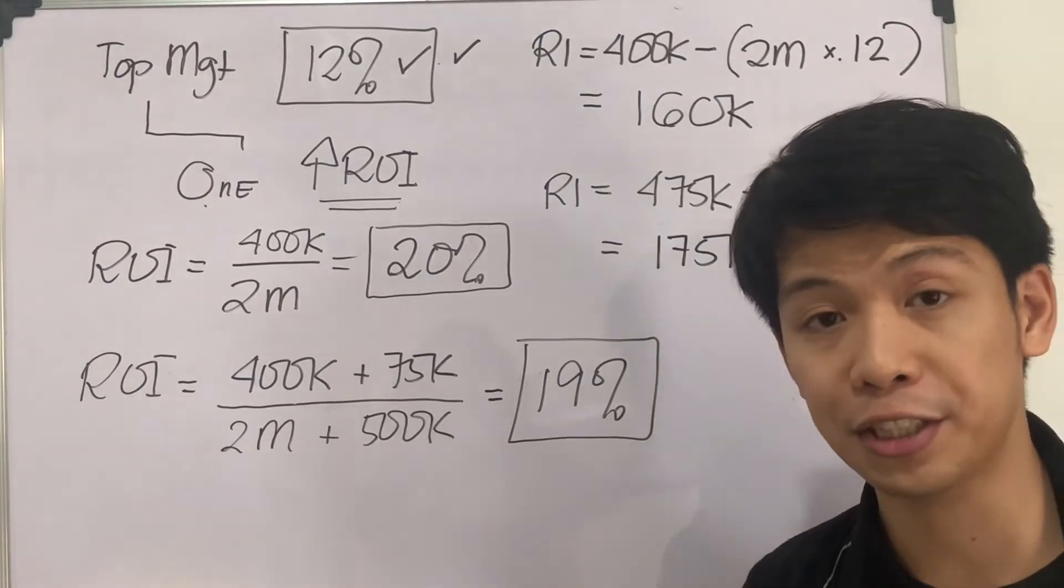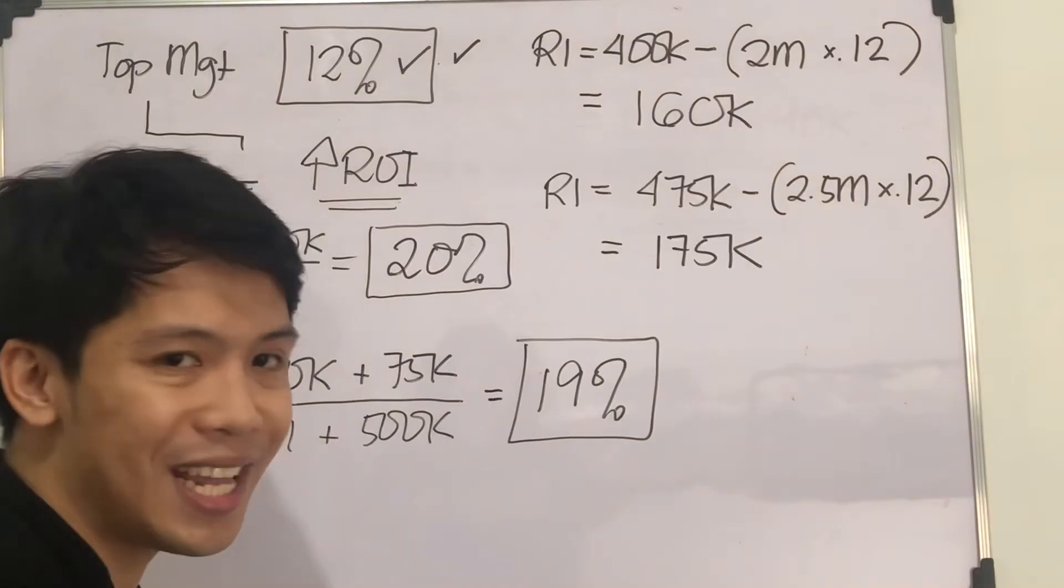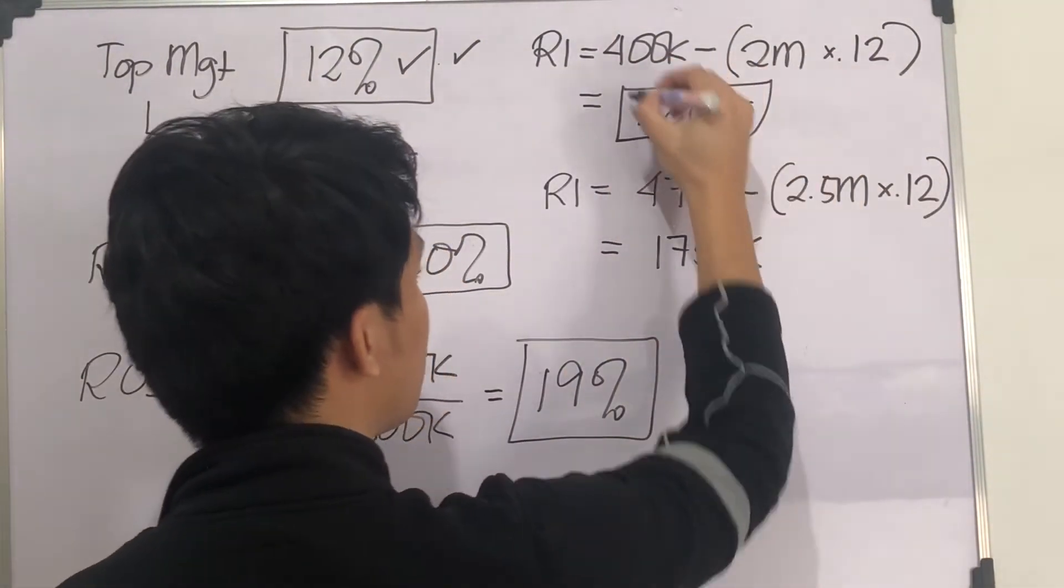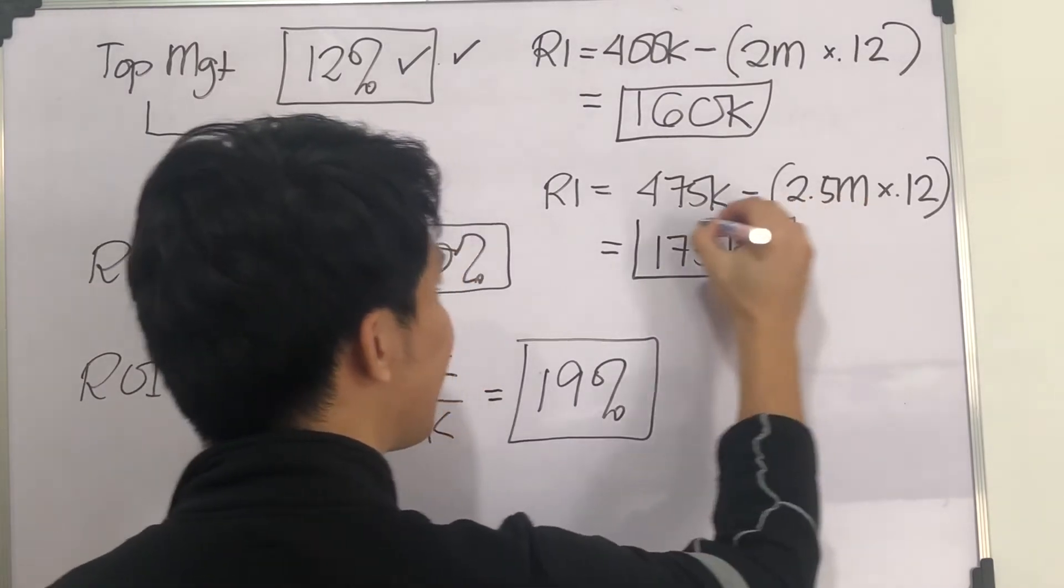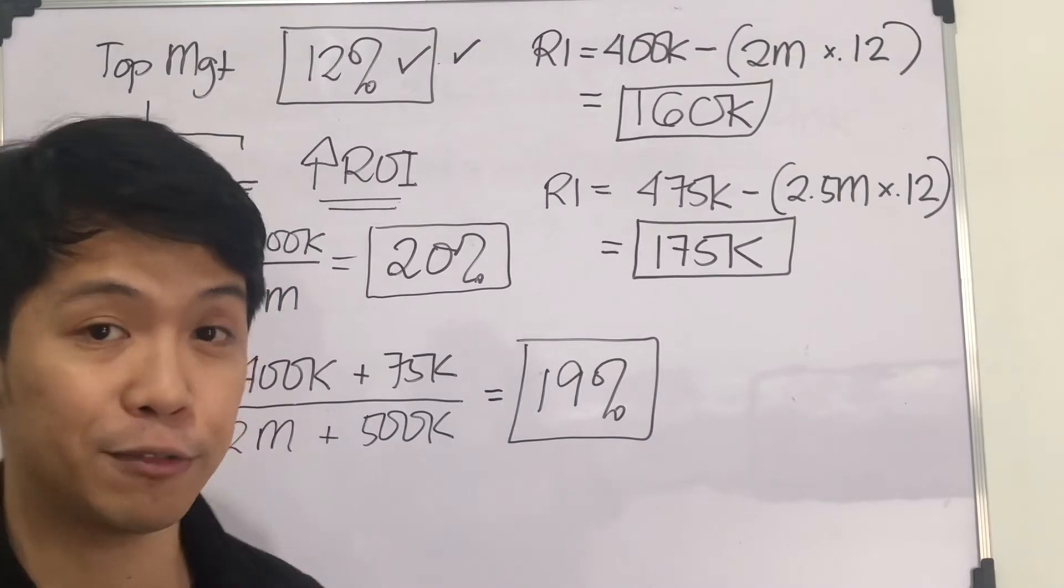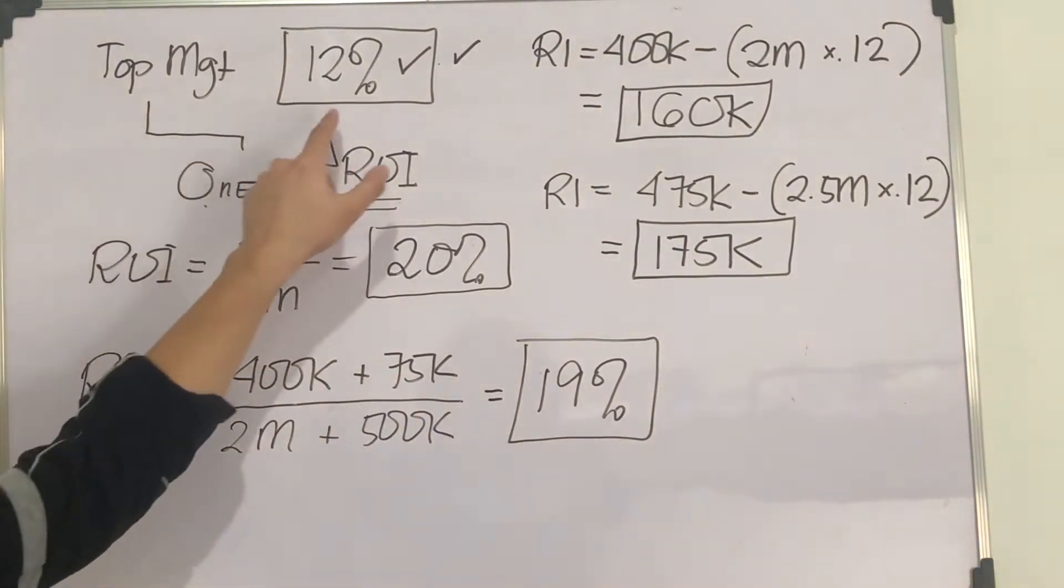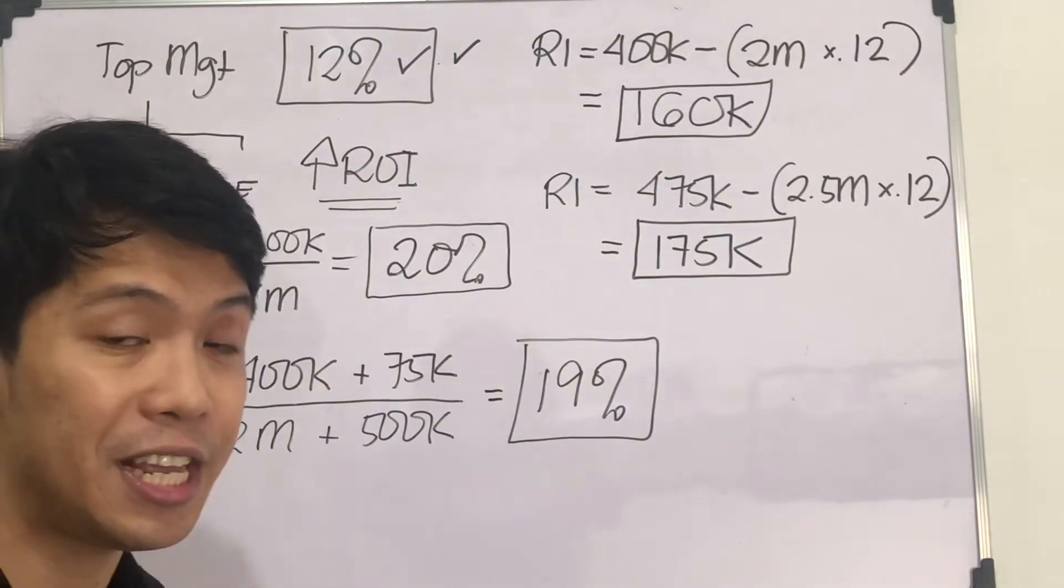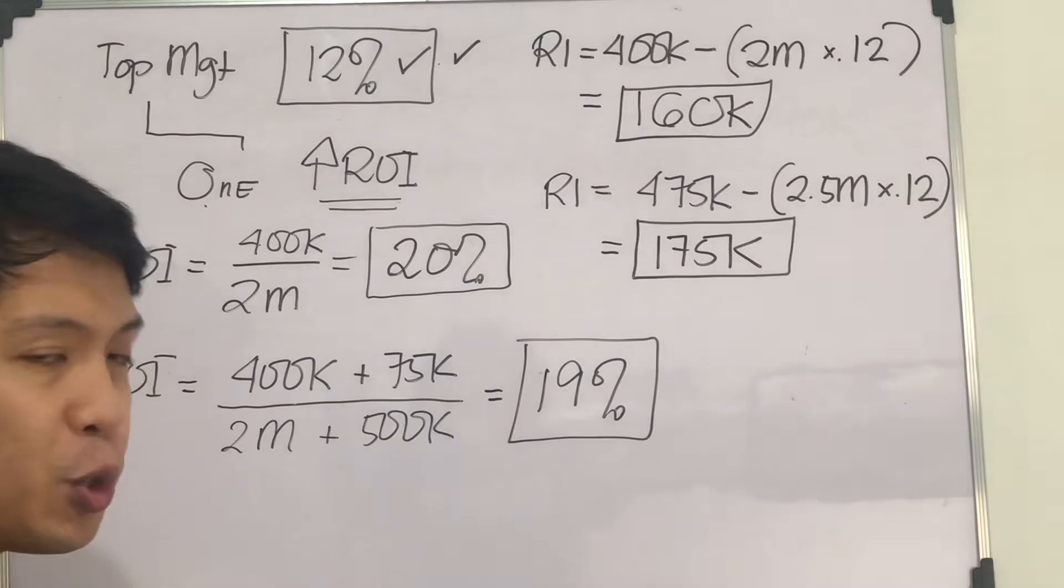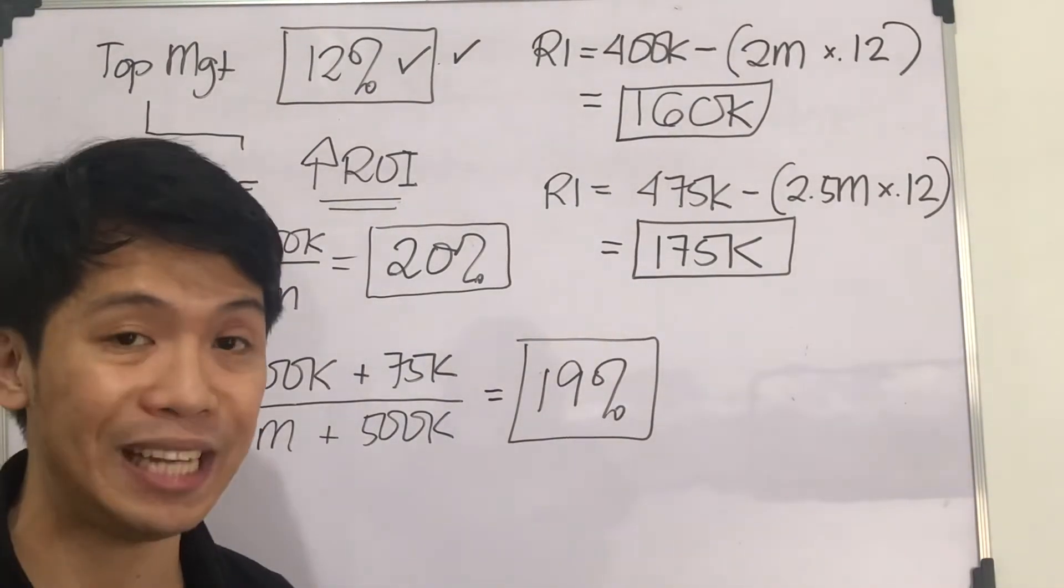If we are going to use residual income as the basis for our evaluation, we can increase such a figure from $160,000 to $175,000. Again, if we're going to use ROI as a basis for evaluation, the project which top management desires, considering it will earn 15%, we will not be eager to take the project if we are going to be evaluated on the basis of ROI.